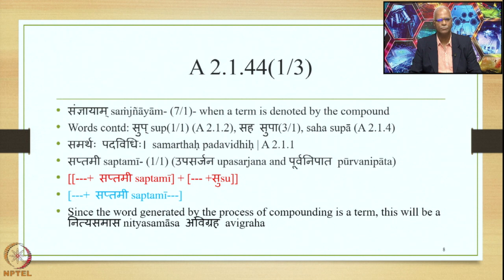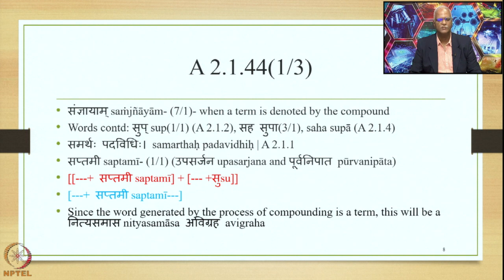By the Sutra Upasarjanam Purvam, the Saptamiyanta word will occupy the initial position in the compound, so Purva Nipatha will take place. The meaning of the Sutra can be stated as follows: we have two Subantas. At the end of the first Subanta there is the Saptami Vibhakti, and at the end of the second Pada there is any interrelated Subanta. The Samasa Saudhnya happens, and finally we get a compound consisting of the Purva Pada Prathipadika and the Uttara Pada Prathipadika.